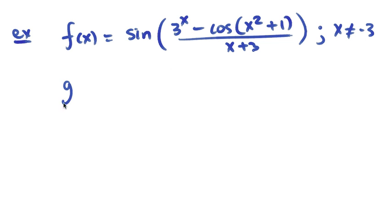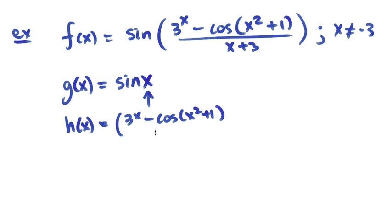If I start with a basic function that's just sine x, the way that I get f of x is by doing a substitution using the composition of functions. So I've got another function that I'm substituting in. That other function is three to the x minus cos x squared plus one, all divided by x plus three.